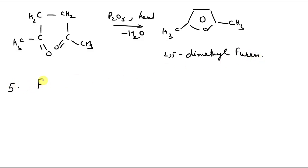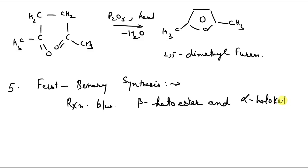Next method is Feist-Benary method. Feist-Benary synthesis. So in this synthesis basically there is a reaction between beta-ketoester and alpha-haloketone. So if you remember pyrrole there, we also used ammonia. But now we don't require ammonia as nitrogen is not required. So simply we have beta-ketoester.